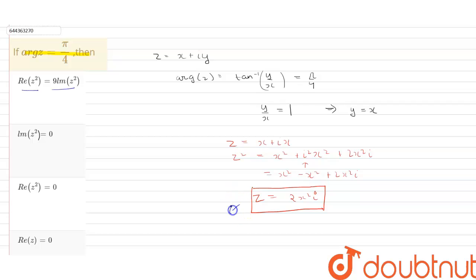But imaginary part of z squared has some value. Therefore this is incorrect.